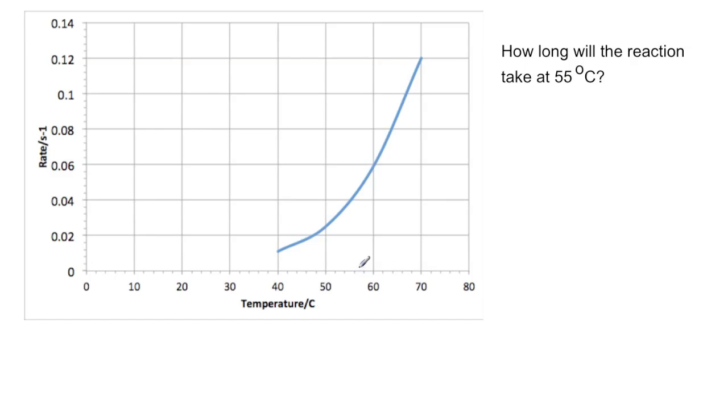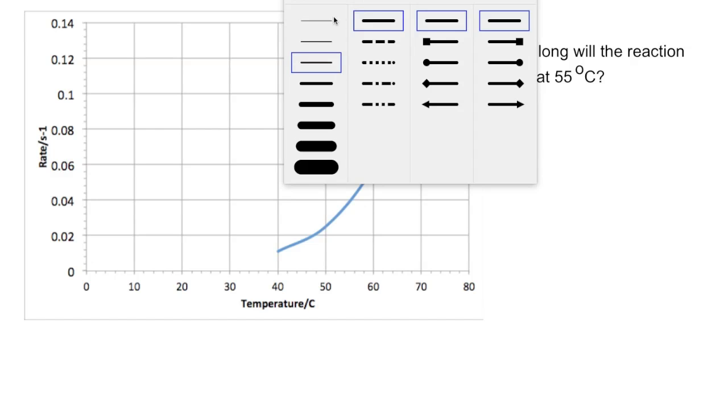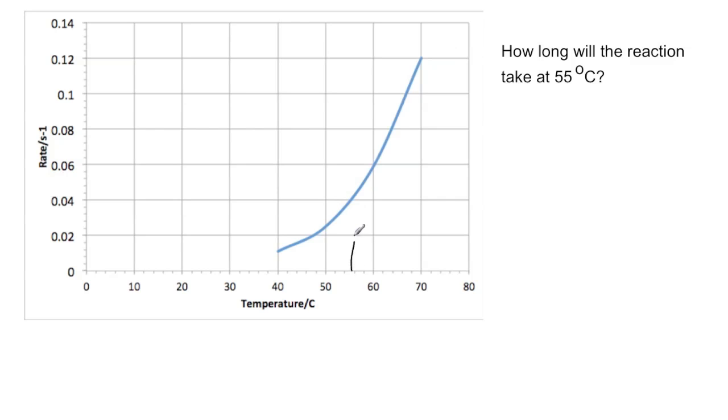So 55 was not one of the temperatures that we were looking at but we can extrapolate from the graph. So if we just draw on to our graph we trace up a line at the 55 point and you can see that it hits here at this line. So our rate is equal to 0.04 per second.